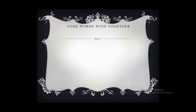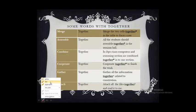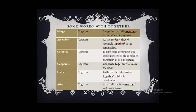Some words where we should not use 'together': 'merge' — merging means combining two cells together to form a single entity, so using 'together' here is superfluous. 'Assemble' means gathering together, so again using 'together' is superfluous. The correct form is: 'All students should assemble in the seminar hall.'